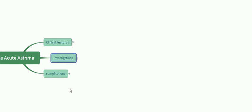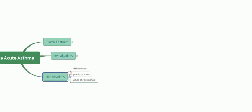Complications are important to know beforehand so they can be prevented. Number one is dehydration — the patient is constantly breathing very fast and ultimately develops dehydration, which disrupts electrolyte balance. Pneumothorax is a direct complication of severe acute asthma, and acute cor pulmonale can also occur.